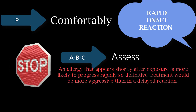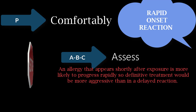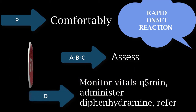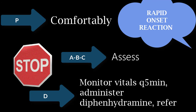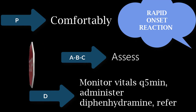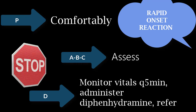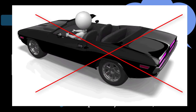An allergy that appears shortly after exposure is more likely to rapidly progress, so definitive treatment would be more aggressive than that of a delayed reaction. We want to monitor vitals every five minutes. The dentist will administer IM or IV diphenhydramine, which is a histamine blocker, and if it begins to resolve the symptoms, the patient would be placed on an oral histamine blocker for two to three days. It's important to note that any time a histamine blocker is administered in the dental office — whether oral, IM, or IV — the patient cannot be permitted to drive because that medication will make the patient very drowsy.